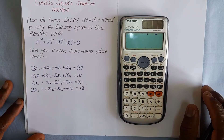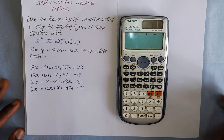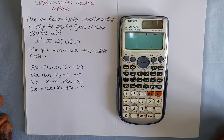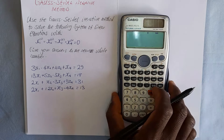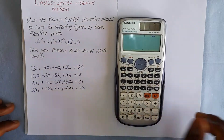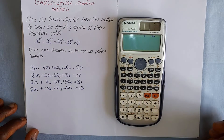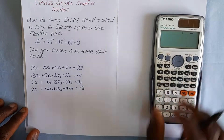Hello everyone and welcome. Today we will look at the Gauss-Seidel iterative method of solving systems of linear equations containing four variables with the help of a scientific calculator, the Casio FX991 ES+. Consider the question presented here.